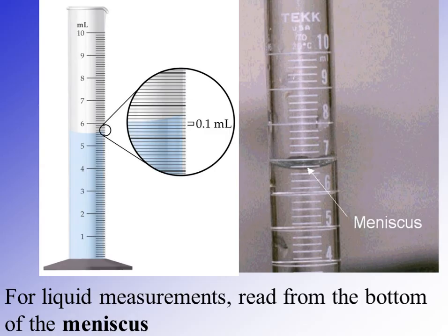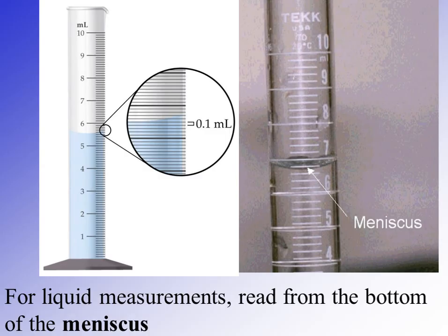On average, any error introduced by the meniscus usually averages itself out. With this graduated cylinder, the smallest increment being tenths of a milliliter, we would record the measurement to the nearest hundredth. The meniscus appears to be right on the 5.5 milliliter mark, so our hundredths digit would be zero — recorded as 5.50 mL. It does not matter if your measurement lands right on a marking; the number of decimal places you report is determined by the increment of those markings. If the smallest marking is to tenths, you report to hundredths. You always estimate one additional place.